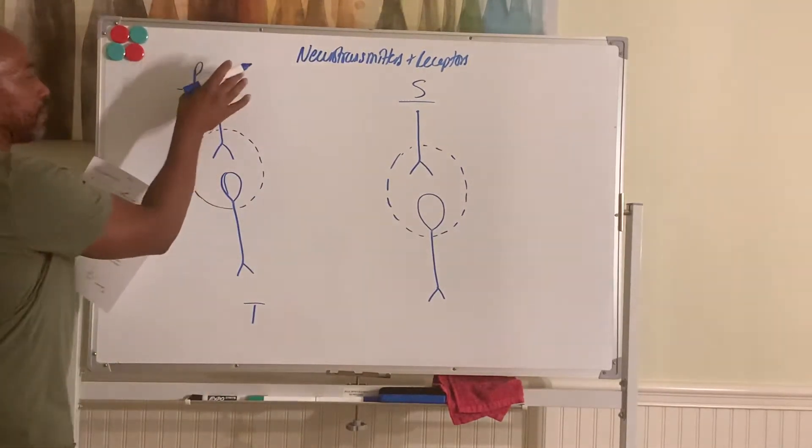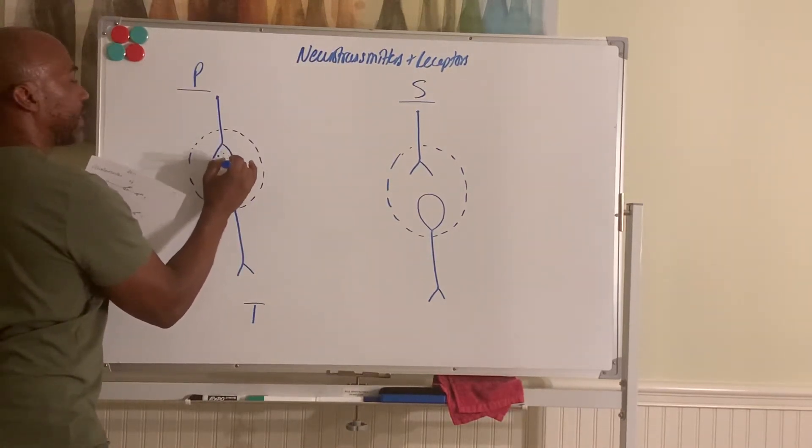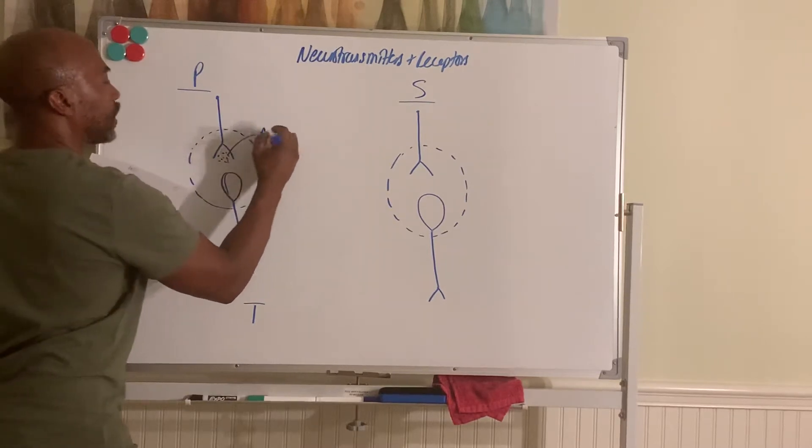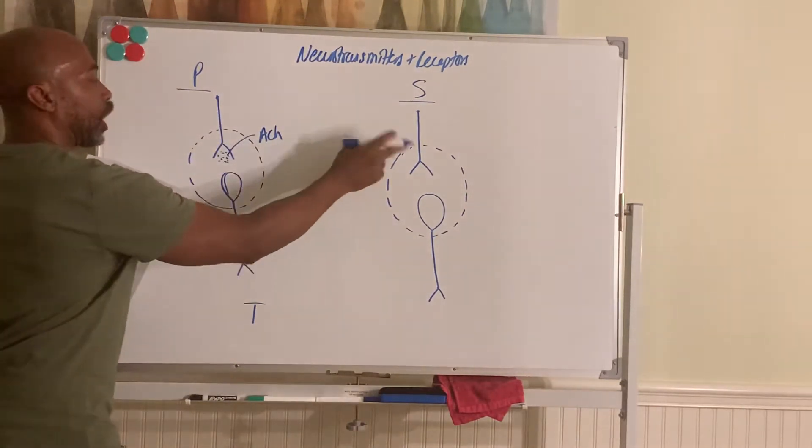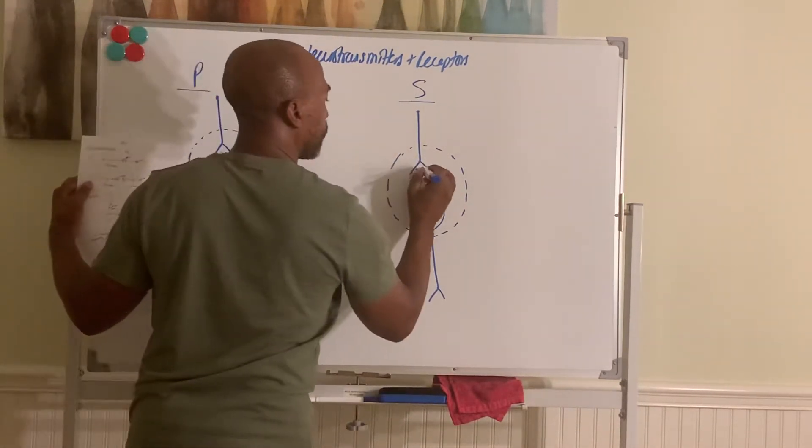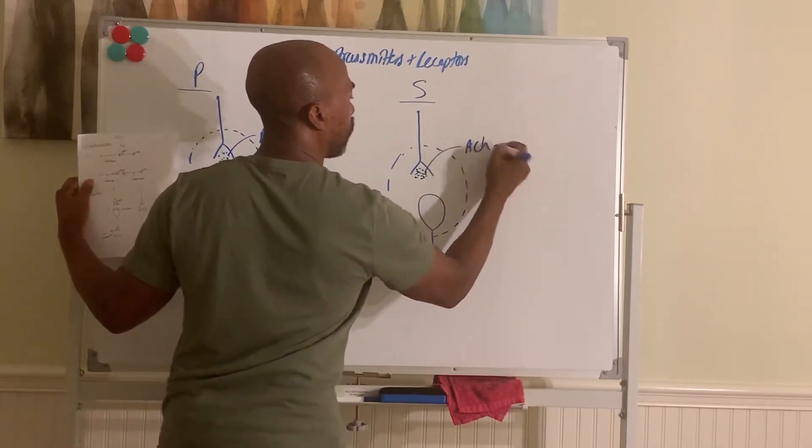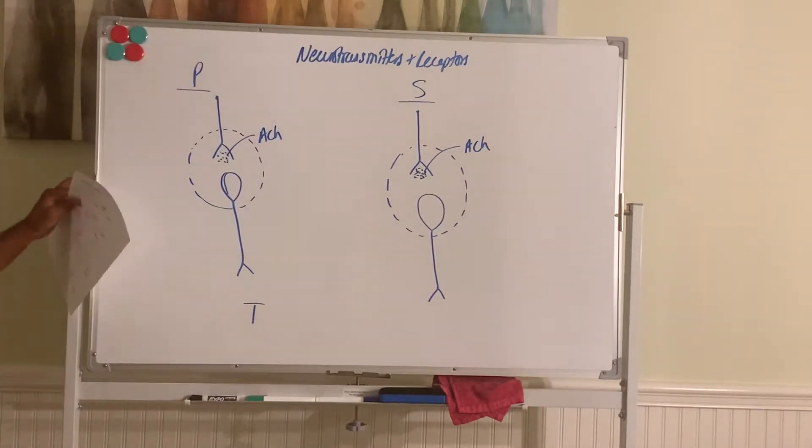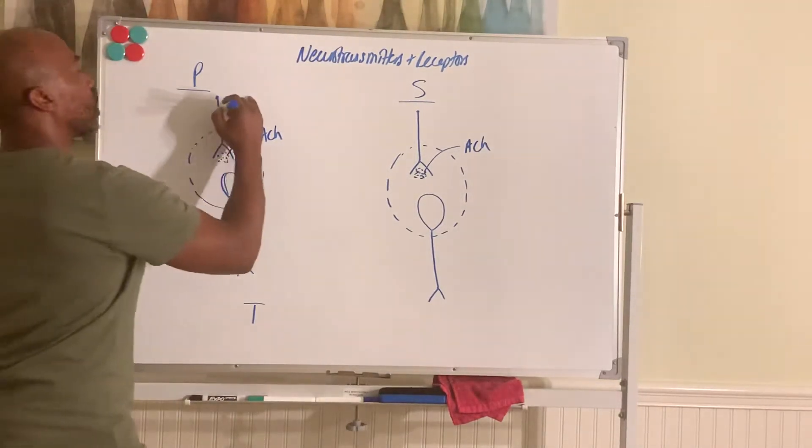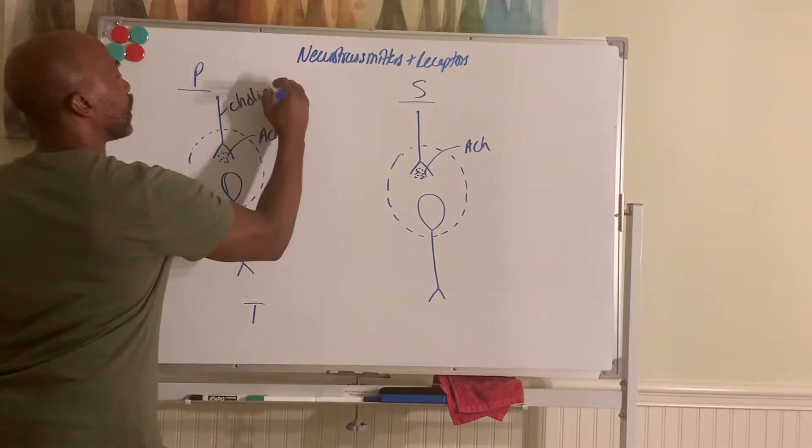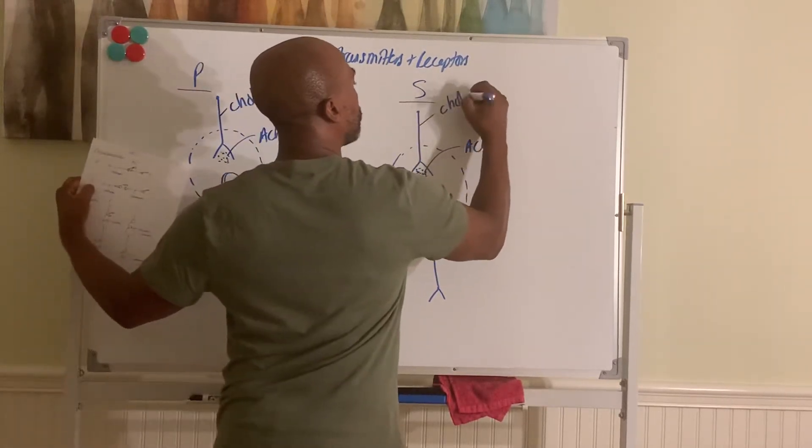Now, in both divisions, para and sympa, this neuron releases ACH. That's the chemical, that's the neurotransmitter that's released by both pre-ganglionic neurons in the ANS. This chemical is acetylcholine, ACH. And so we call neurons that release ACH, those neurons are called cholinergic fibers. Cholinergic neurons or fibers.